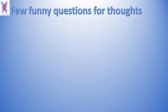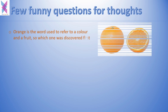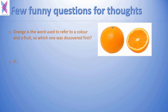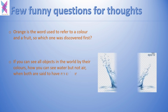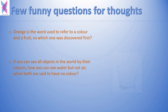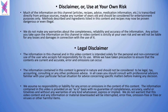Finally, some fun questions for your thoughts. When 'orange' is a word used to refer both to a color and a fruit, do you know which one was discovered first? Think about it and please comment if you know the answer. Second question: if you could see all objects in the world only by their colors, how can you see water but not earth, when both are said to have no color? Again, please comment if you know the answer.